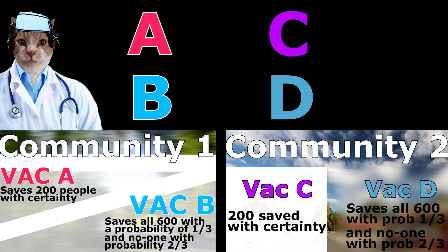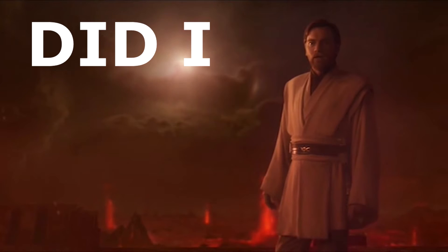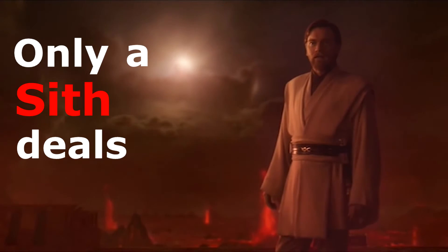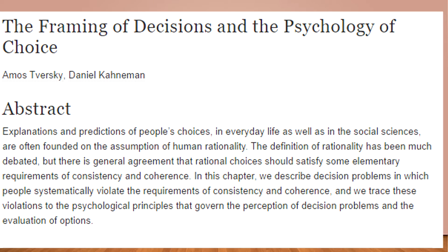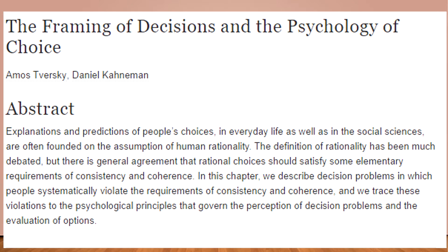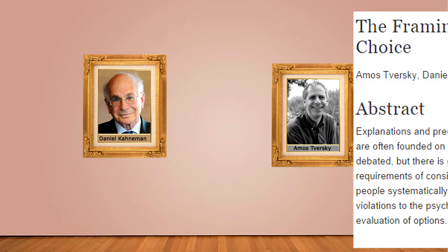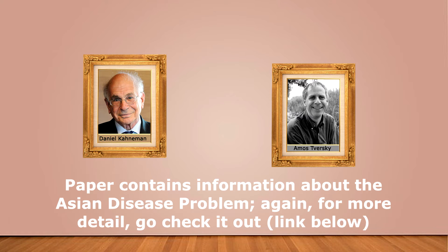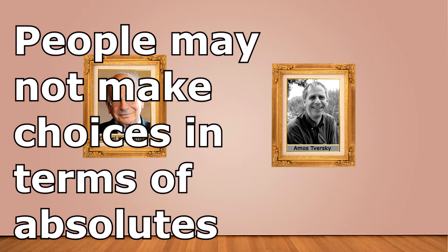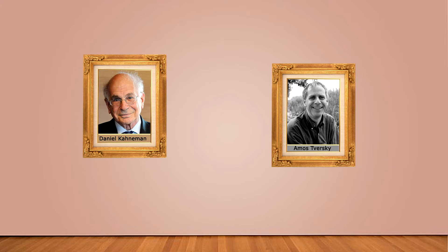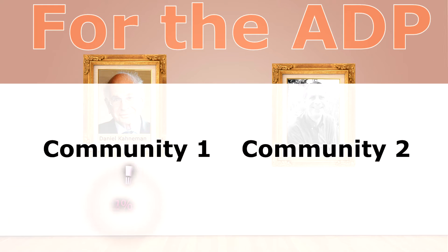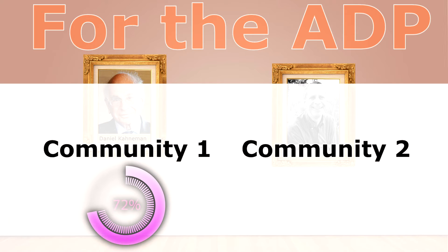My choice, when I first answered these questions, and possibly yours too, was most certainly inconsistent with this — I was more attracted to option A and option D. In their 1981 paper, 'The Framing of Decisions and the Psychology of Choice,' the paper credited with the very creation of the Asian disease problem, Kahneman and Tversky claim that people may not make choices in terms of absolutes. This is supported by their findings: 72% of participants chose A in round one, and 78% chose D in round two.